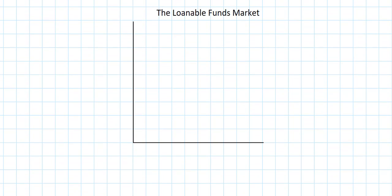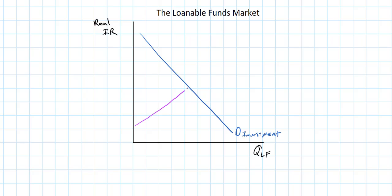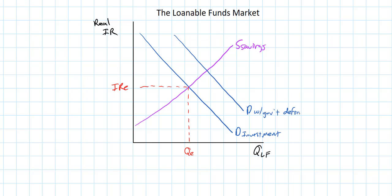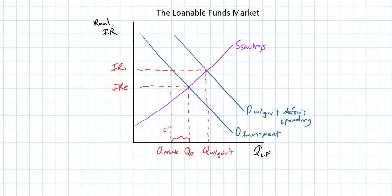Next, we're going to move on to the loanable funds market. This is where the demand for investment and the supply of savings in an economy determines the real interest rate — our vertical label — and the quantity of funds demanded for investment. The downward sloping demand for investment curve represents the inverse relationship between real interest rates and investment in an economy, while the supply curve represents the direct relationship between the interest rate and savings. You most likely want to use the loanable funds graph to illustrate crowding out — when an increase in government deficit spending drives up the demand for loanable funds, causing the equilibrium real interest rate to rise and a decrease in the quantity of private sector investment, labeled as Q private.